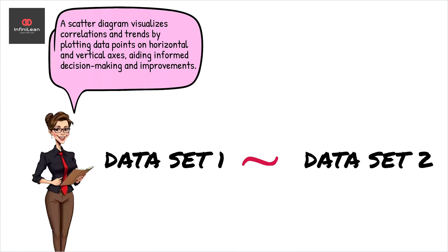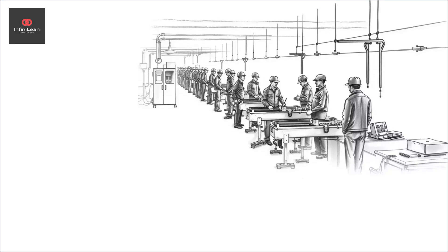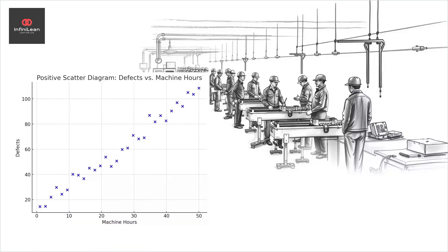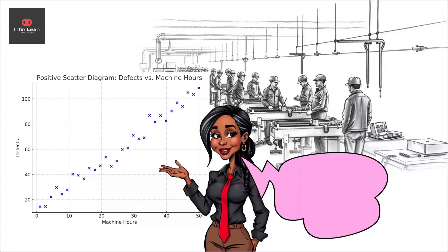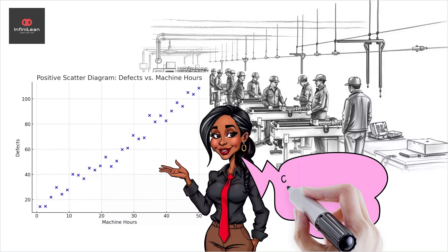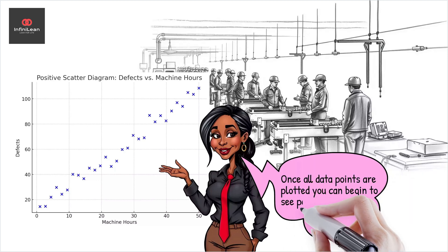To get started, you need two sets of related data. For example, if you're a manufacturer, you might want to analyze the relationship between machine operation time and product defects. On the x-axis, you plot the machine hours, while on the y-axis, you chart the number of defects. Each point on the graph represents one observation.